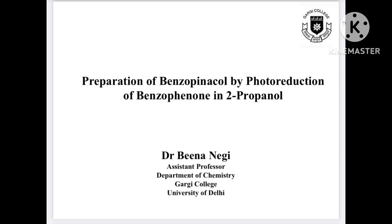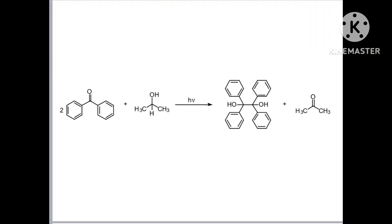Hello everyone, this is my YouTube channel. In this video I'm going to show you how to prepare benzopinacol by photoreduction of benzophenone in isopropanol. This is the reaction: benzophenone, a keto compound, on reaction with an alcoholic solvent isopropanol, gets converted to benzopinacol, which is a 1,2-diol, along with formation of acetone.